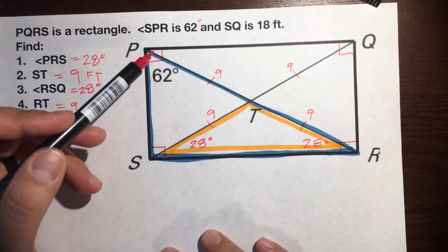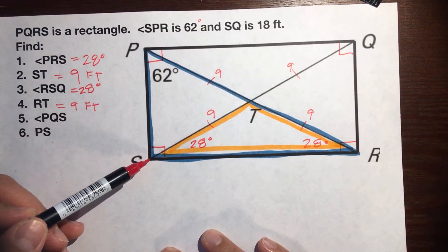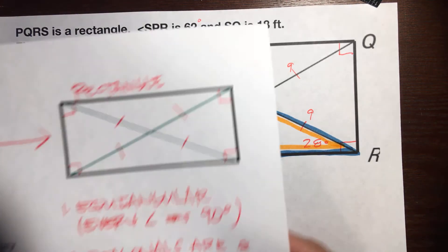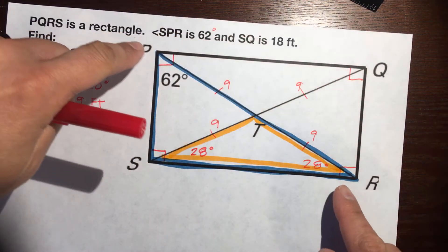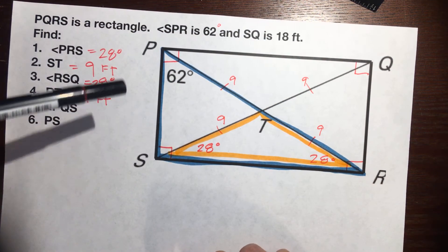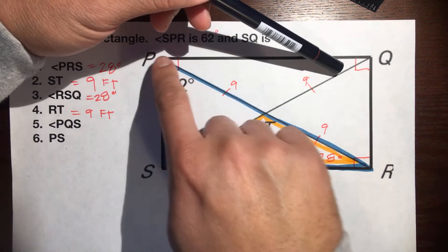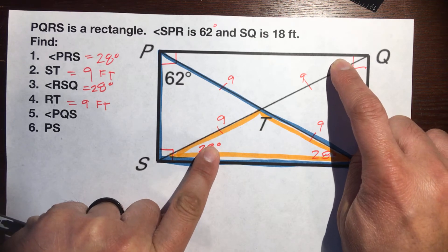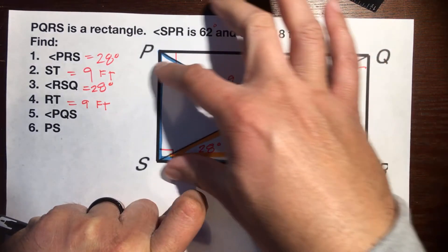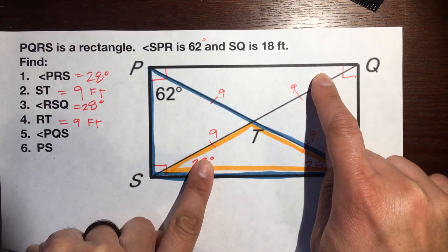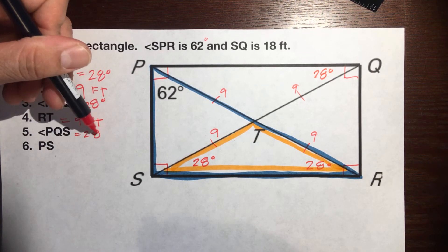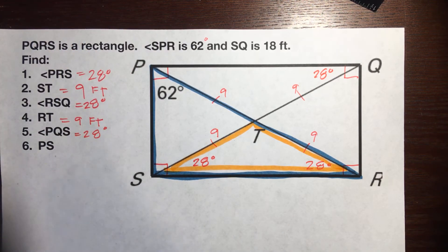What is the measure of angle PQS? The parent of the rectangle is a parallelogram, so these lines are parallel. This line is a transversal, and angles SPR and PQS are alternate interior angles. Since these lines are parallel, alternate interior angles must be congruent. So angle PQS is also 28 degrees. You can also use this information to figure out all other angles, which are probably 62 degrees if you look at them.